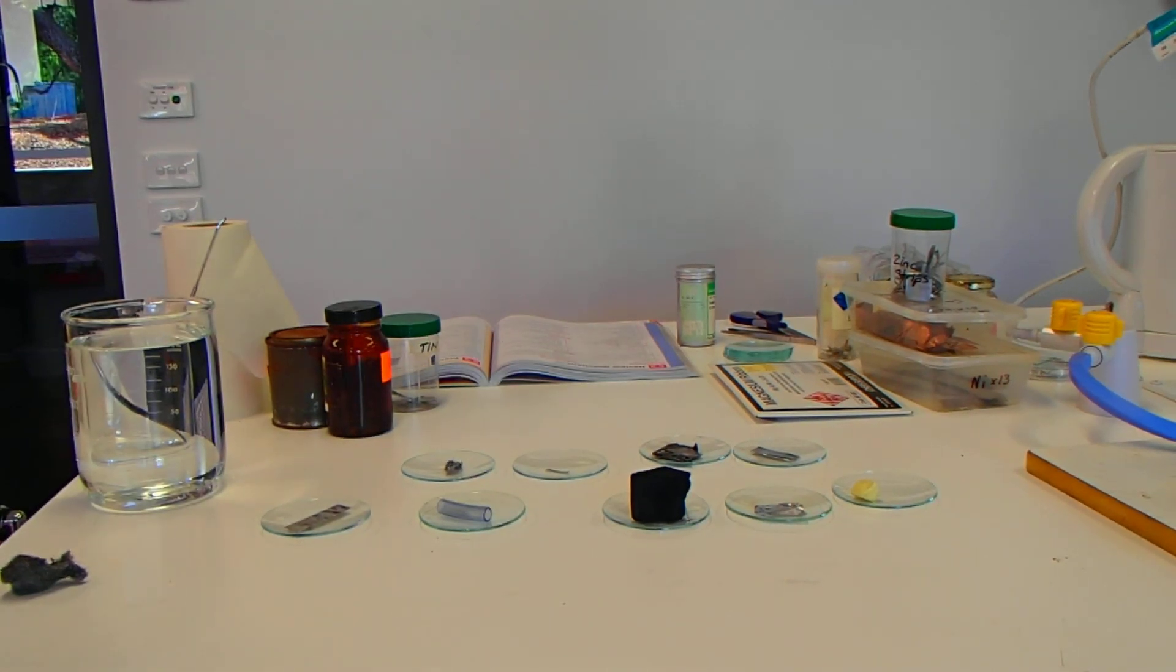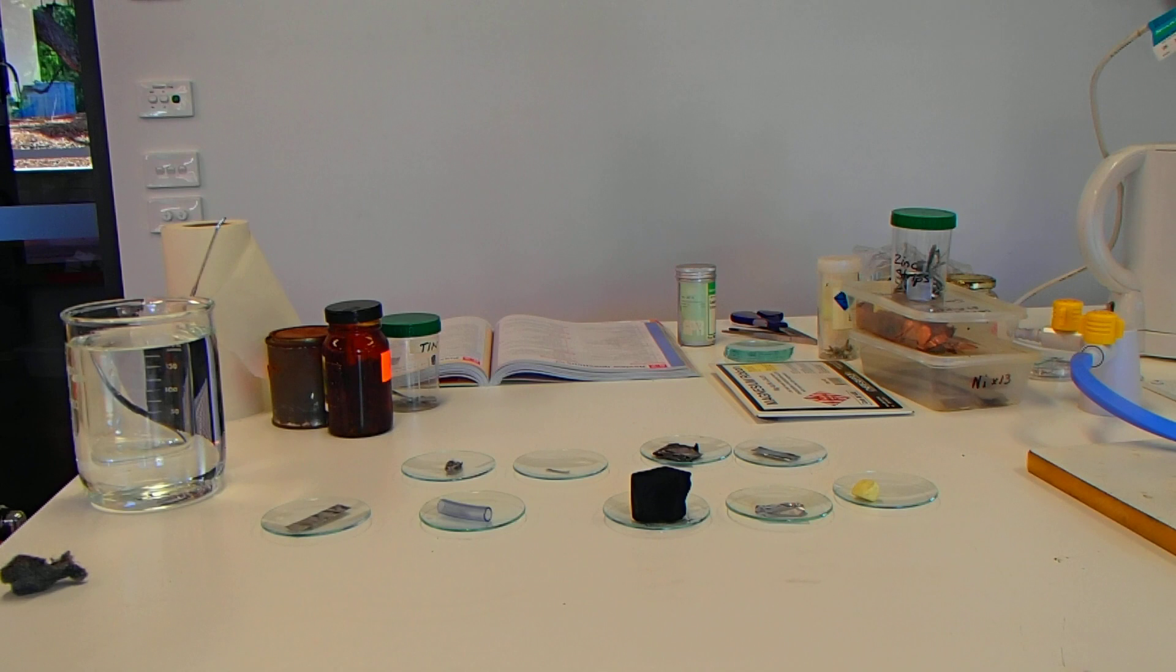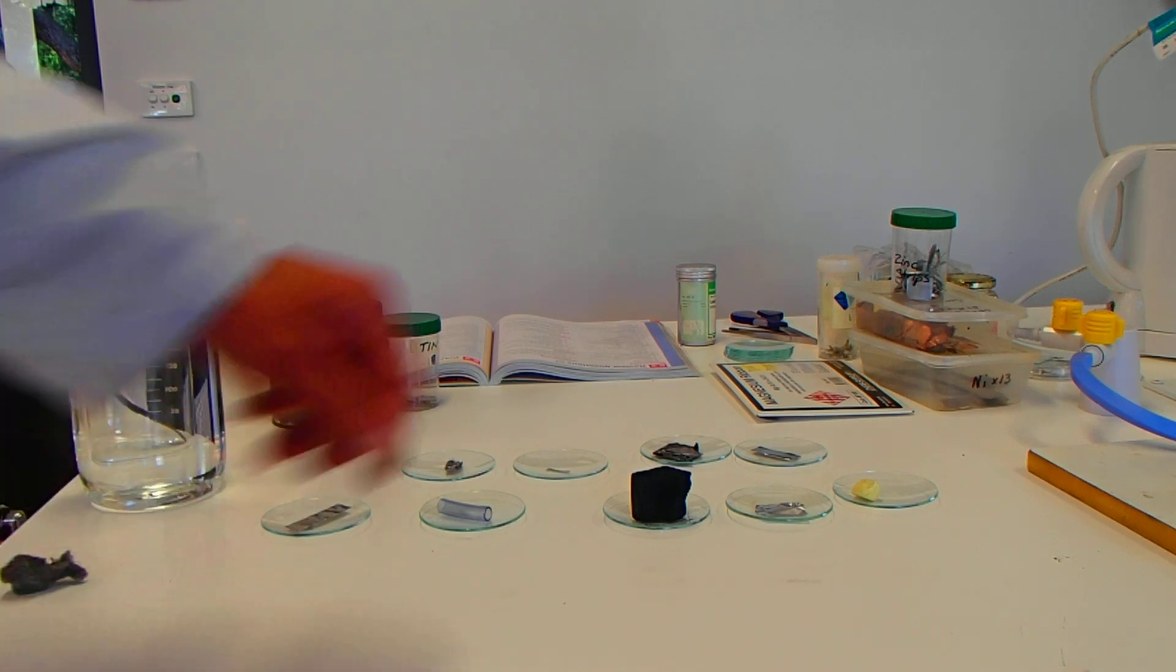Hello again. Now we're on to Activity 5.2, Properties of the Elements. We're going to be looking at the strength of all of these samples, and I'm going to try and bend or crumple them.